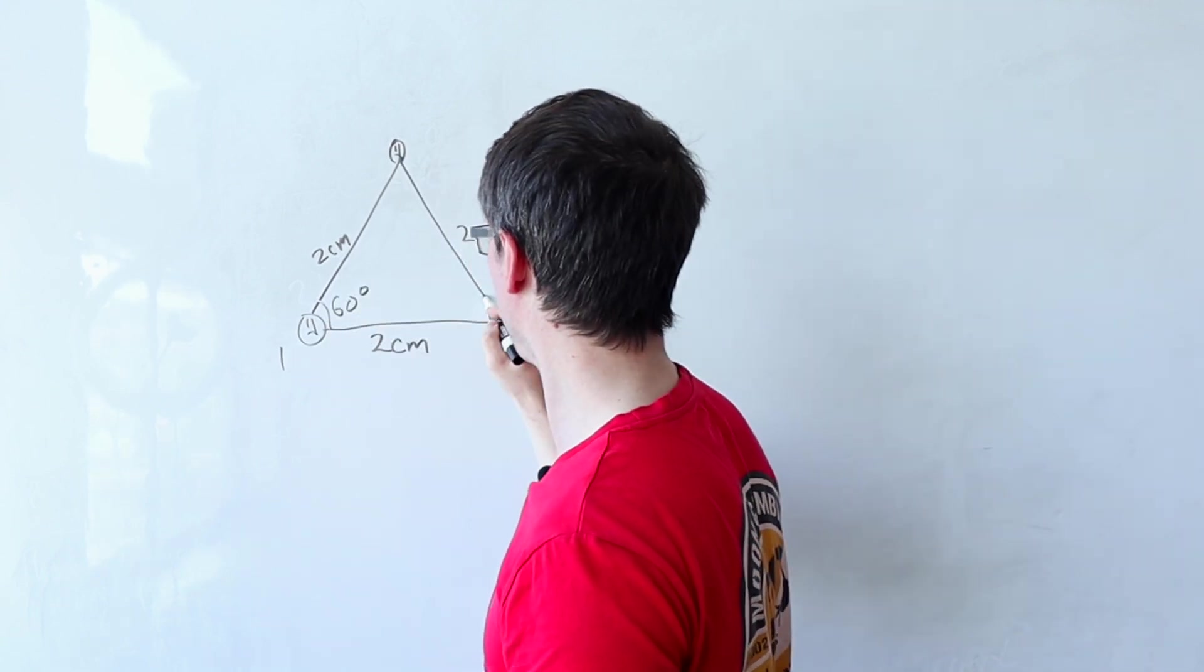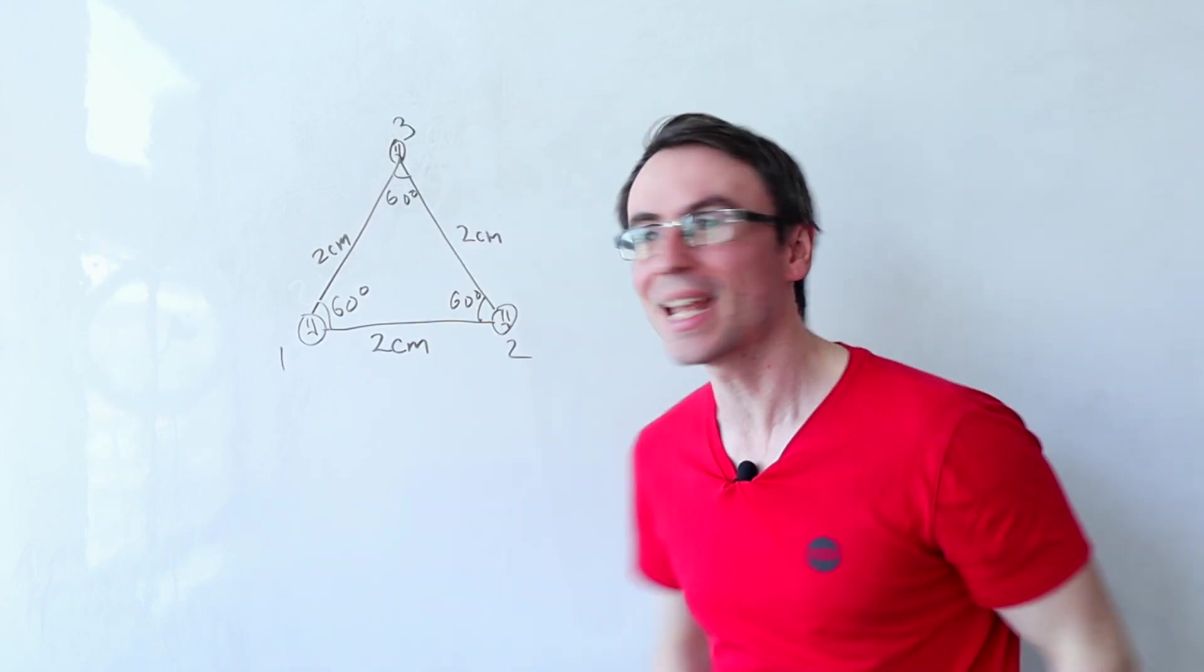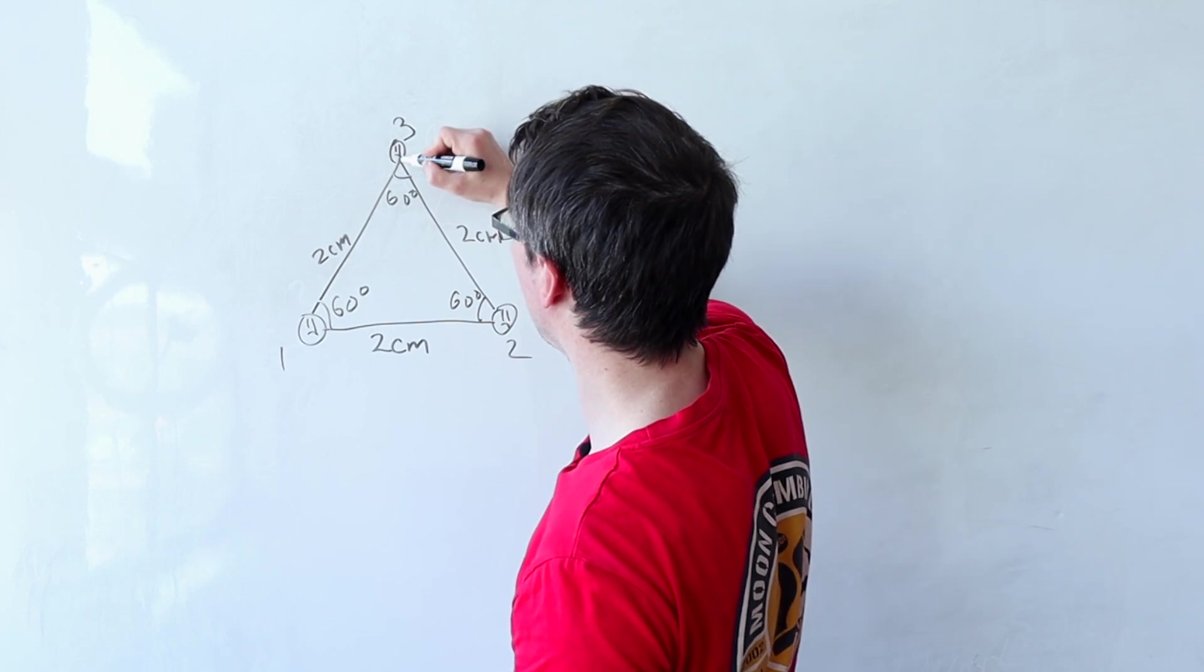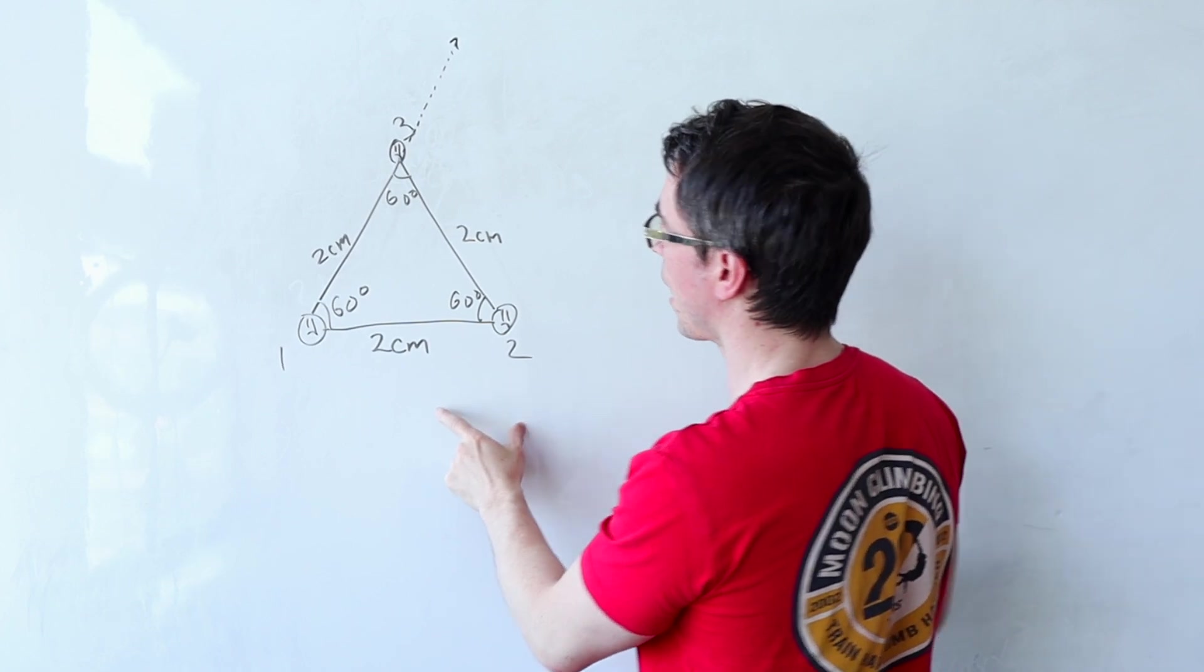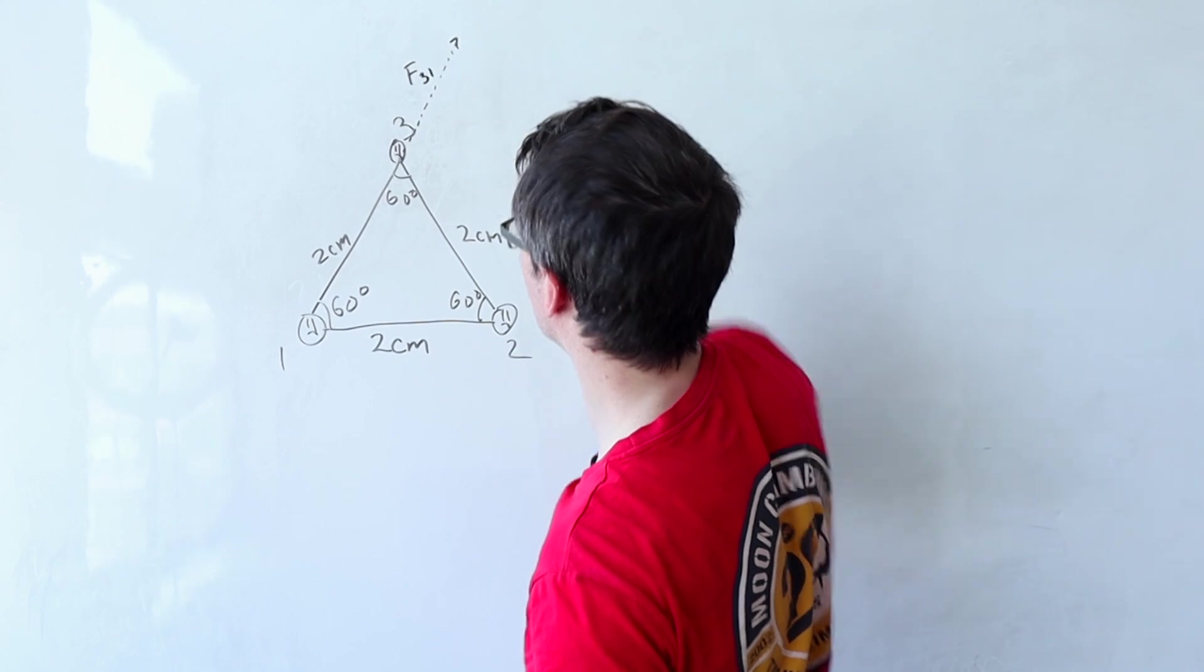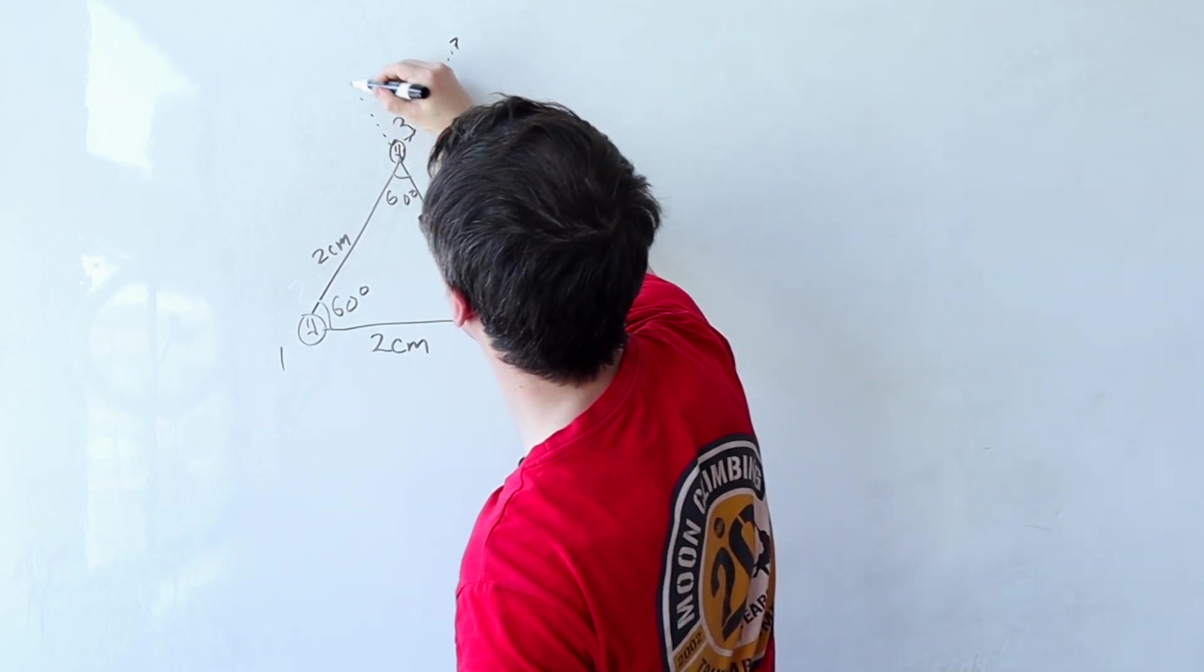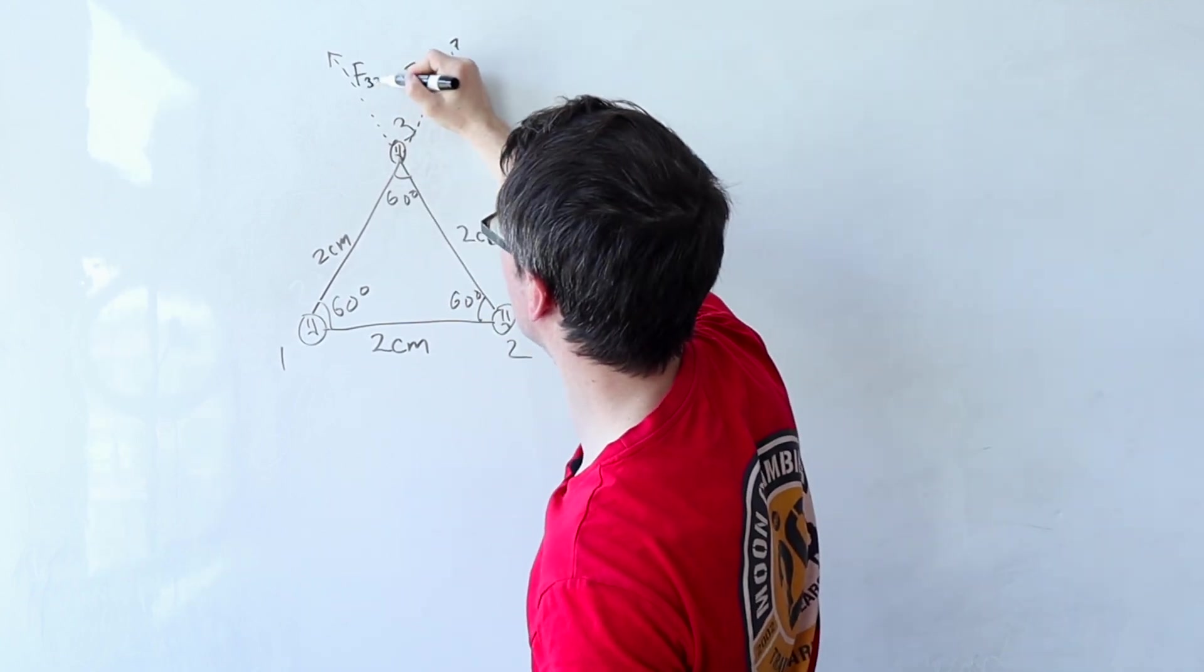By definition then those angles will all be equal to 60 degrees. My question is what is the net resultant force on electron three? Electron three will be repelled by electron one in this direction and it's going to experience a force of repulsion. Let's call it force on three due to one, but it will also experience a repulsive force from this one in this direction. Let's call that force on three due to two.